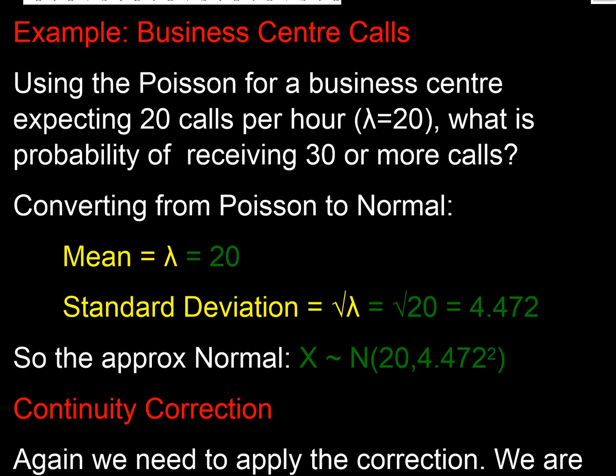Let's use an example. Here I've got a business centre, it's expecting 20 calls per hour on average, and what's the probability of receiving 30 or more calls? First thing we have to do then is to convert our Poisson into a normal. We need to work out the mean of our normal. Well, the mean is going to be lambda, so that's going to be 20, and the standard deviation is going to be the square root of lambda, because that's what it is for a Poisson, and that's going to be the square root of 20, that's 4.72. So here is our normal.